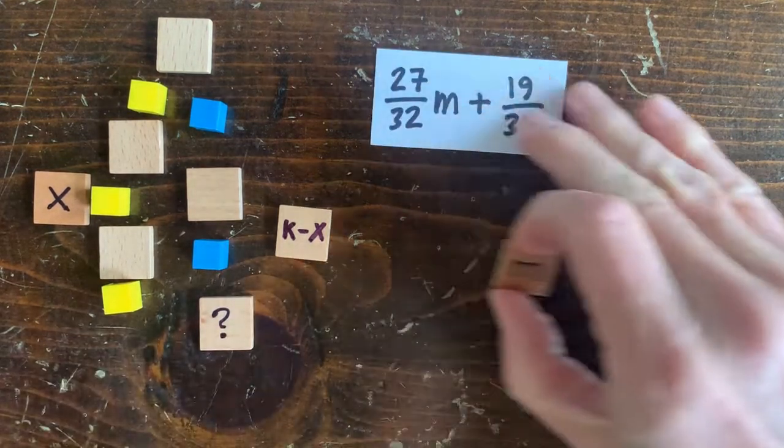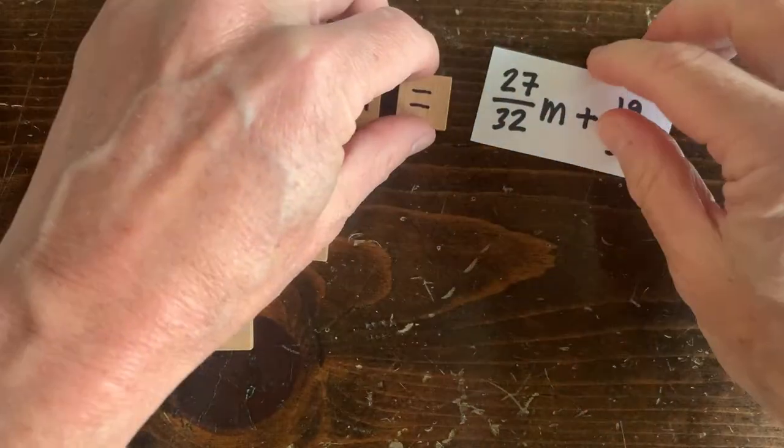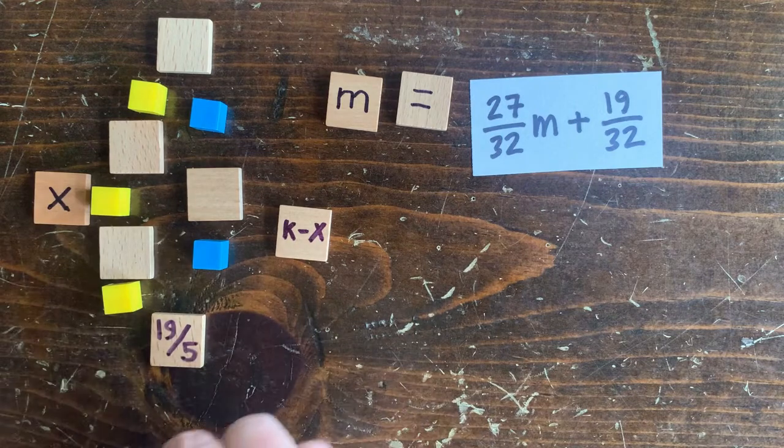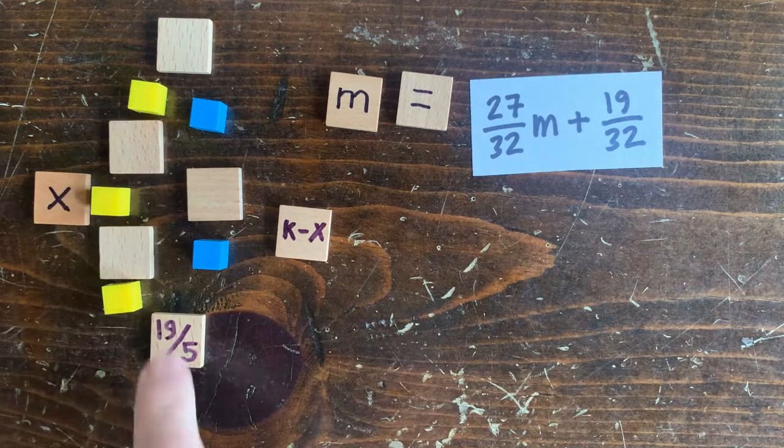And then we can set m to 27 over 32m plus 19 over 32 and solve for m, which gives us 19 over 5, which is the bottom value for the circuit with 3 up moves and 2 down moves.